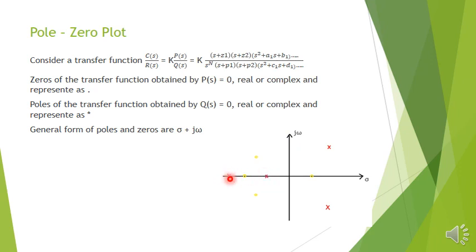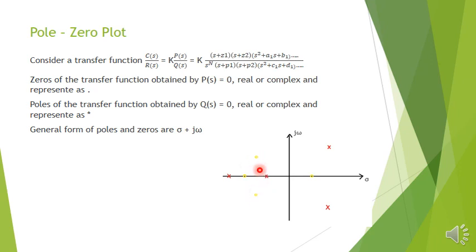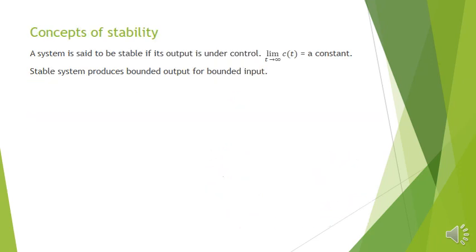If a pole is complex, its conjugate also exists, forming complex conjugate pairs. Similarly, zeros may be real or appear as complex conjugate pairs. This completes the pole-zero plot.